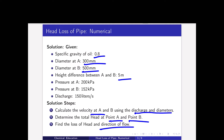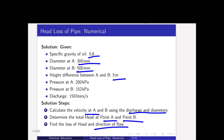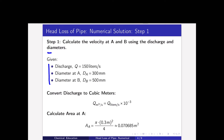First we have to calculate velocity at points A and B, as discharge and diameter are both given. Step one: the discharge is given as 150 liters per second, so we first convert liters per second to cubic meters per second. Diameter at A is 300 mm, which we convert to 0.3 meters. Diameter at B is 500 mm, which converts to 0.5 meters.